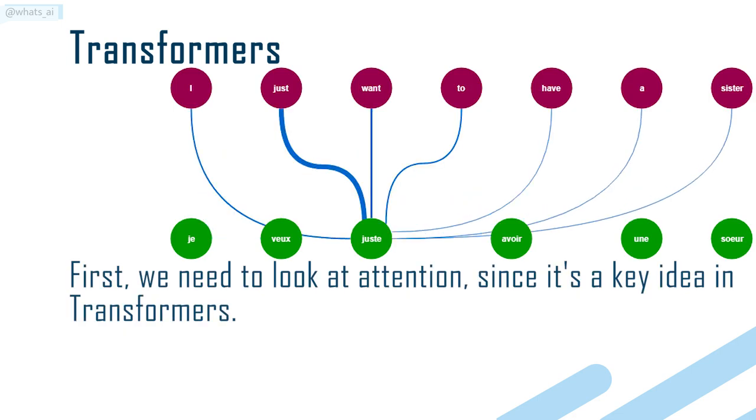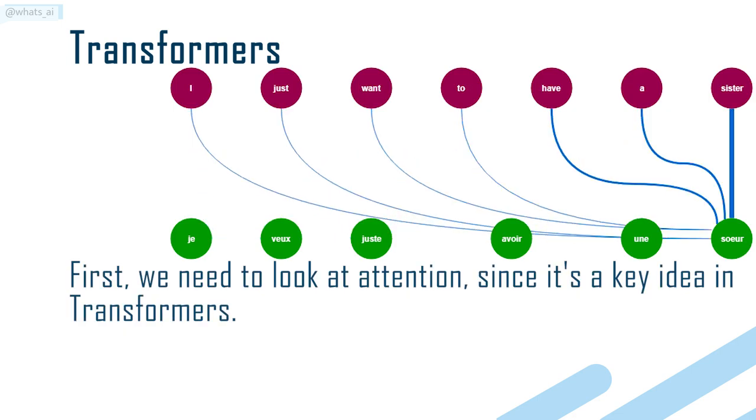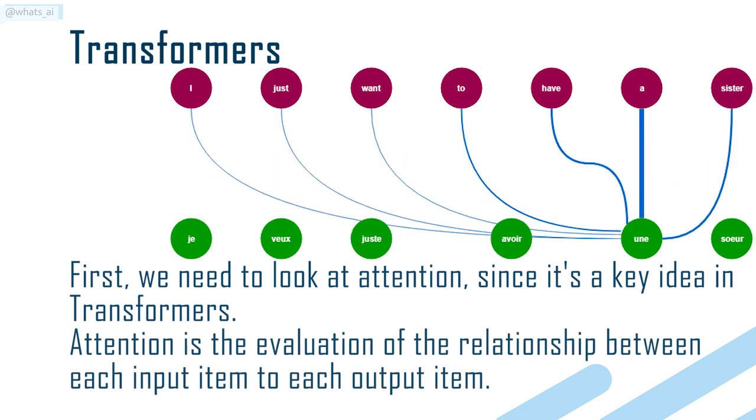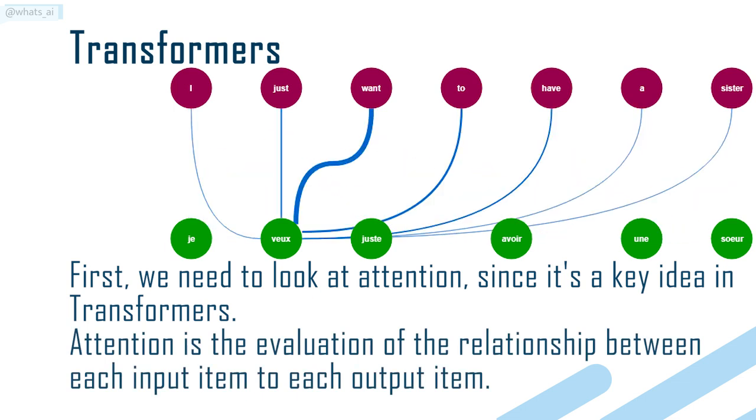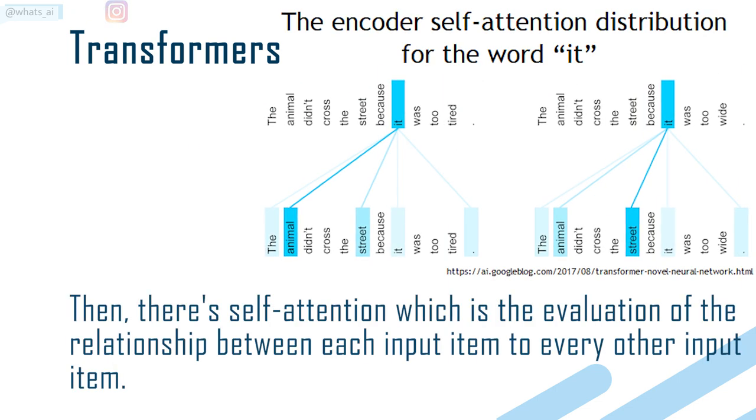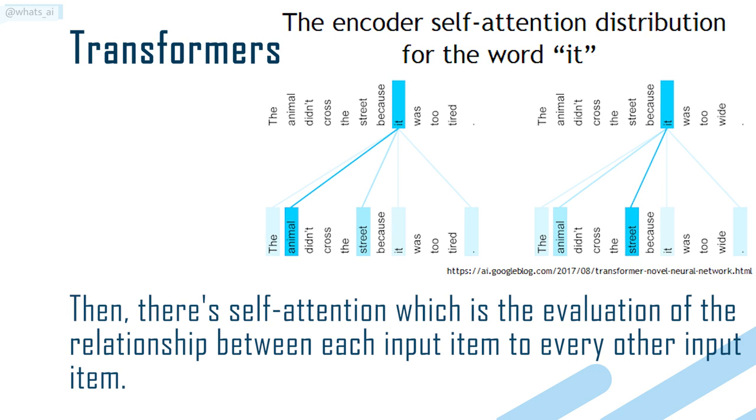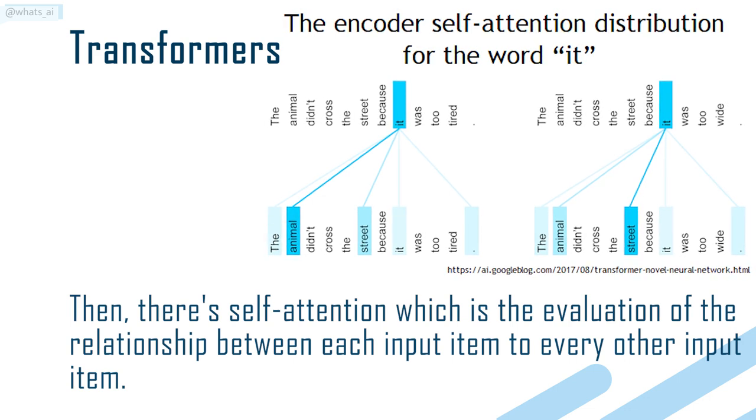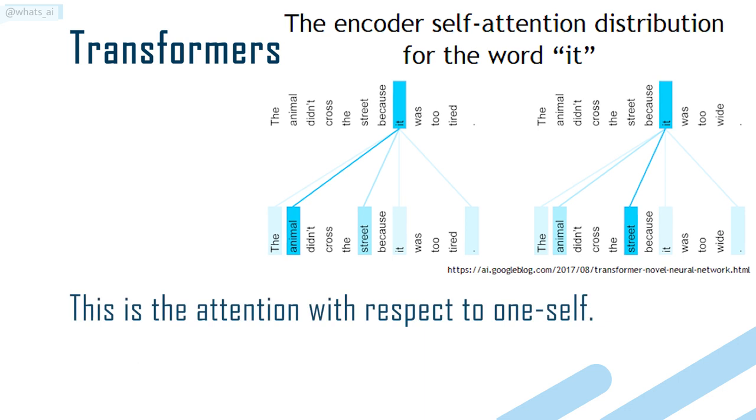First, we need to look at attention, since it's a key idea in transformers. Attention is the evaluation of the relationship between each input item to each output item. Then, there's self-attention, which is the evaluation of the relationship between each input item to every other input item. This is the attention with respect to oneself.